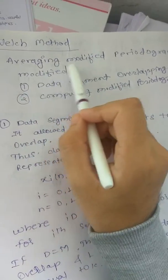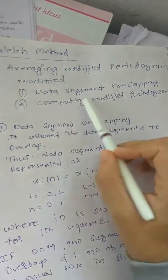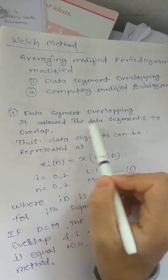Welch method: averaging modified periodogram. Modified data segment overlapping. Computing modified periodogram. Data segment overlapping is allowed; the data segments...